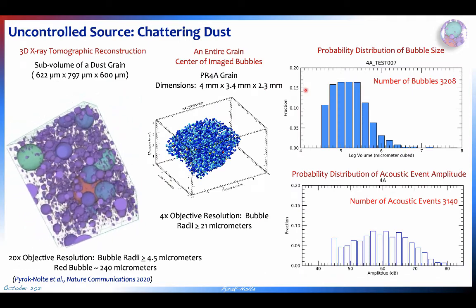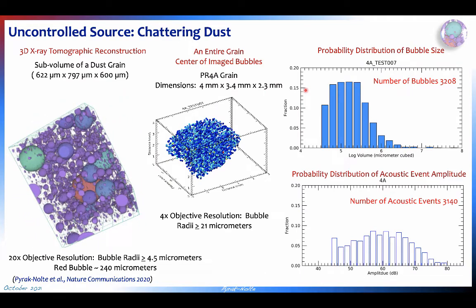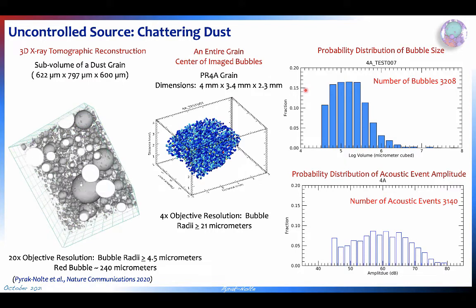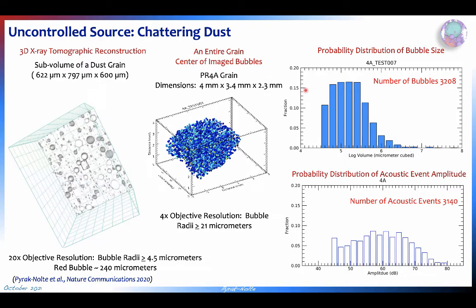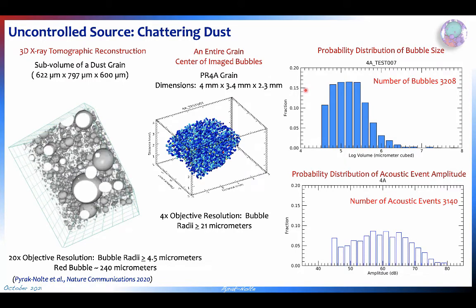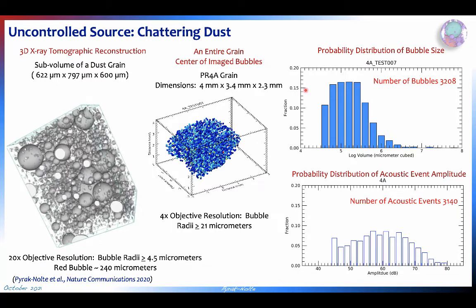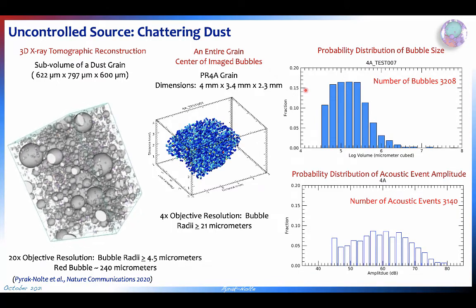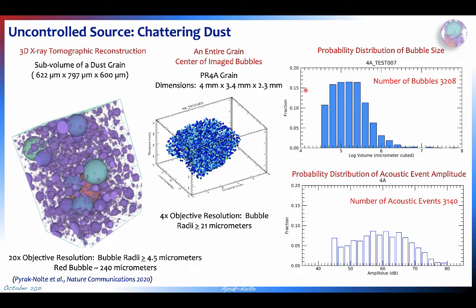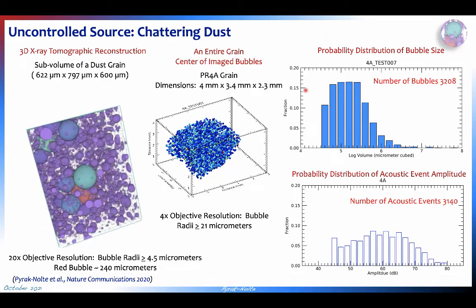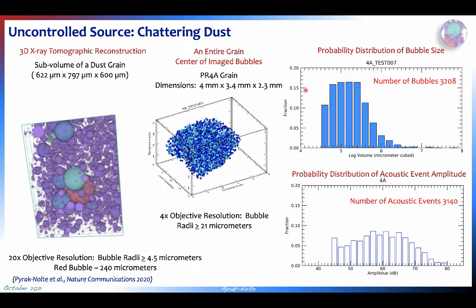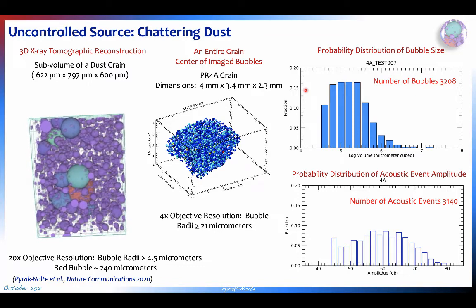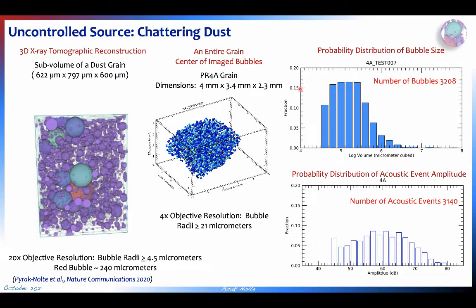We use what we call chattering dust — it's an uncontrolled source. It's a set of granules about a half millimeter in size, made of sucrose and filled with pressurized carbon dioxide. When you put them into water they slowly dissolve, and the pressurized bubbles of CO2 pop. This is an x-ray tomogram showing their structure.